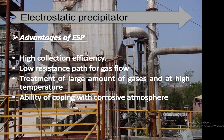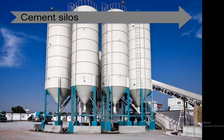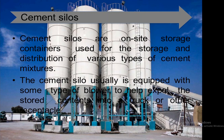Cement silos are on-site storage containers used for the storage and distribution of various types of cement mixtures. Cement silos are usually equipped with some type of blower to help expel the stored contents into a truck or other acceptable vehicles.